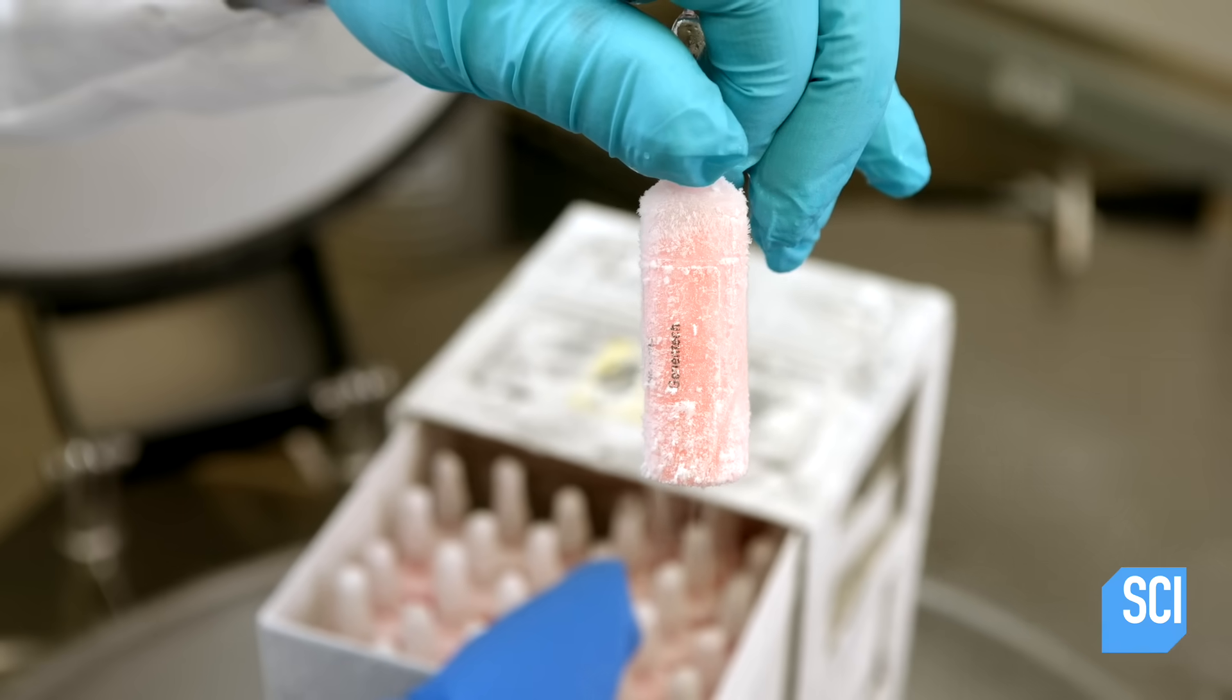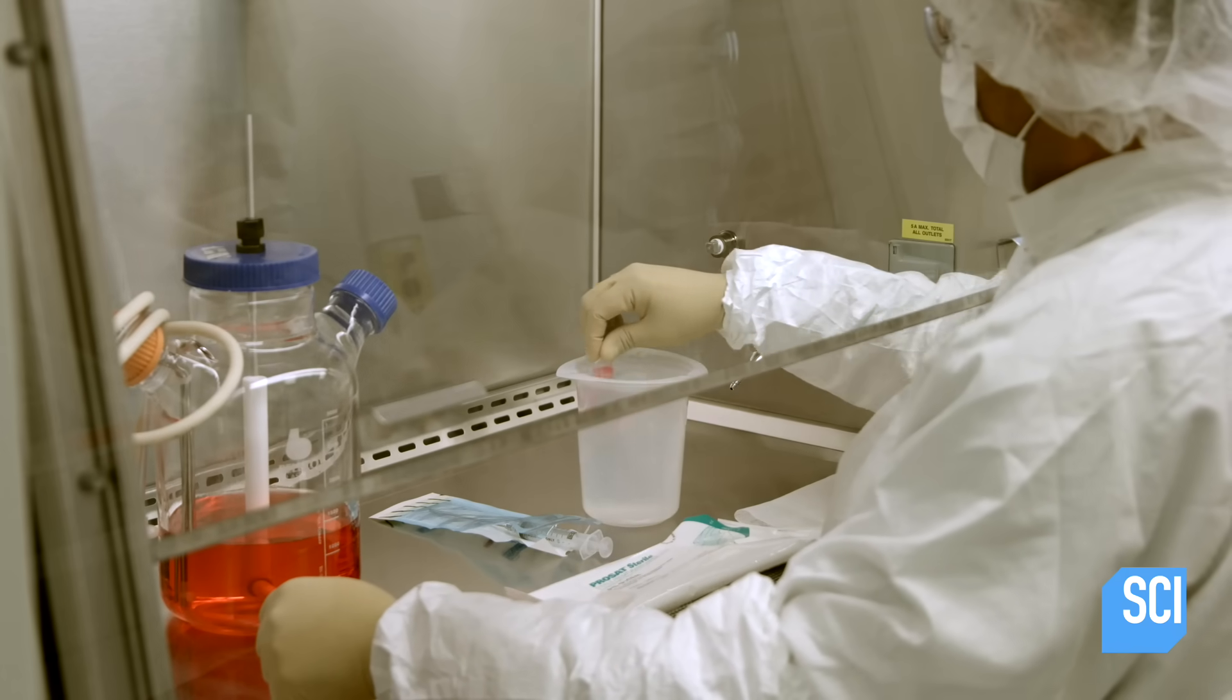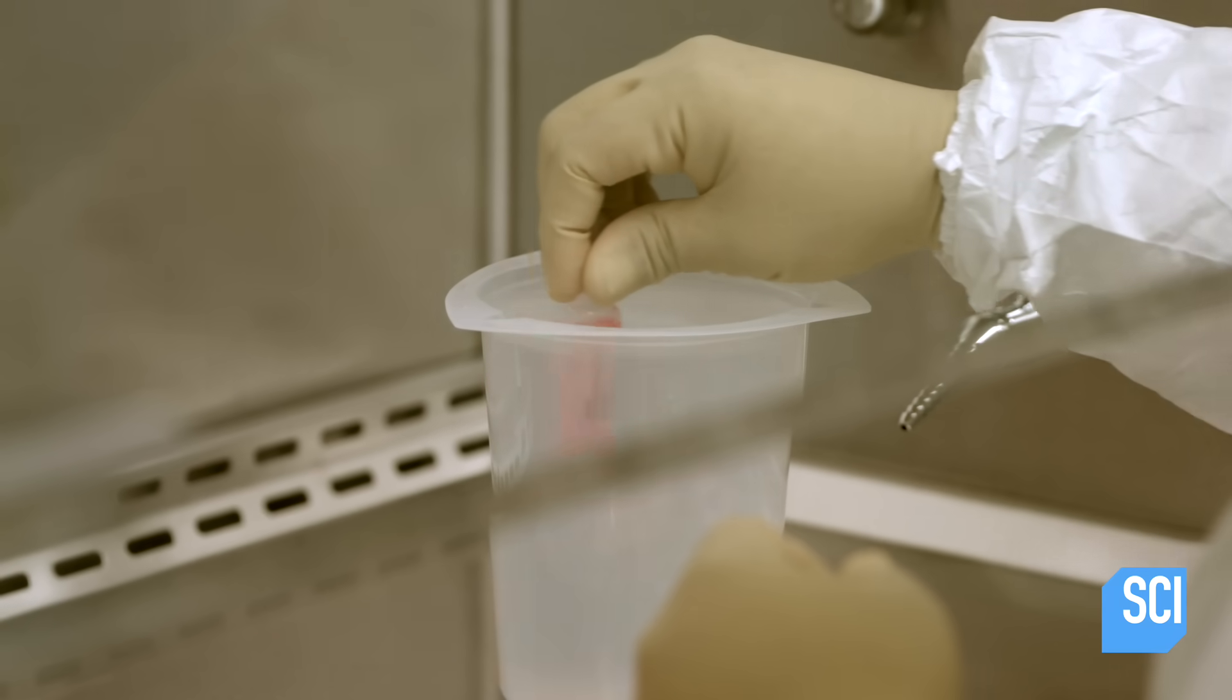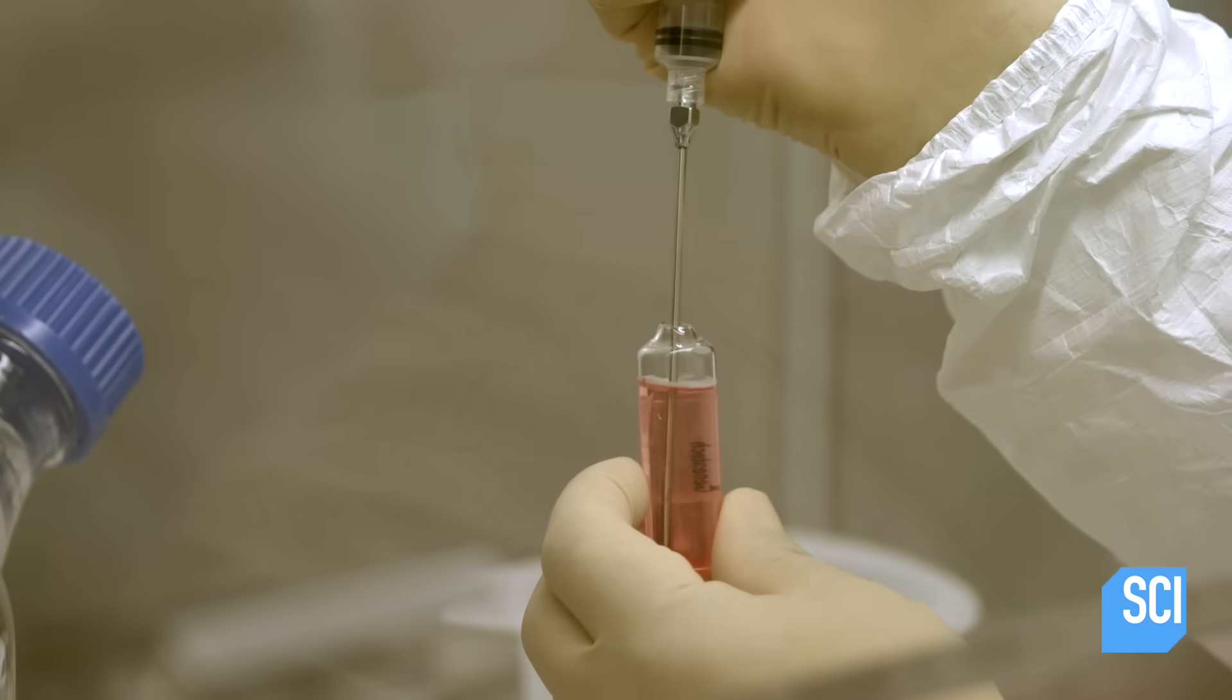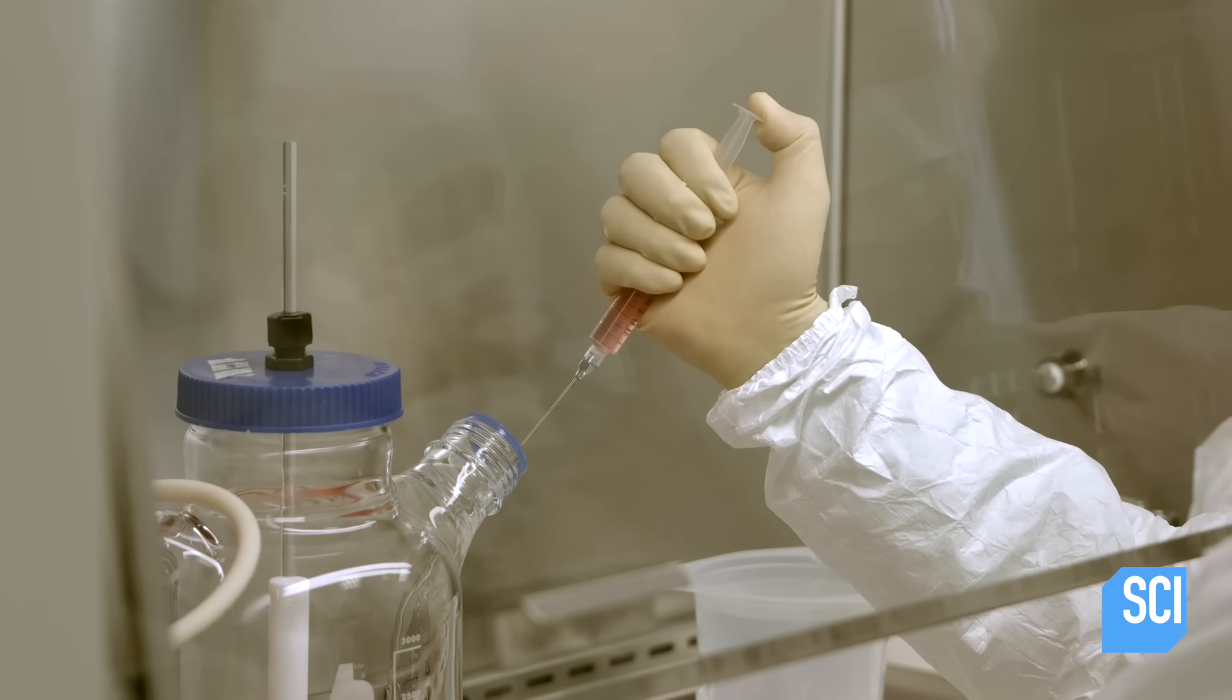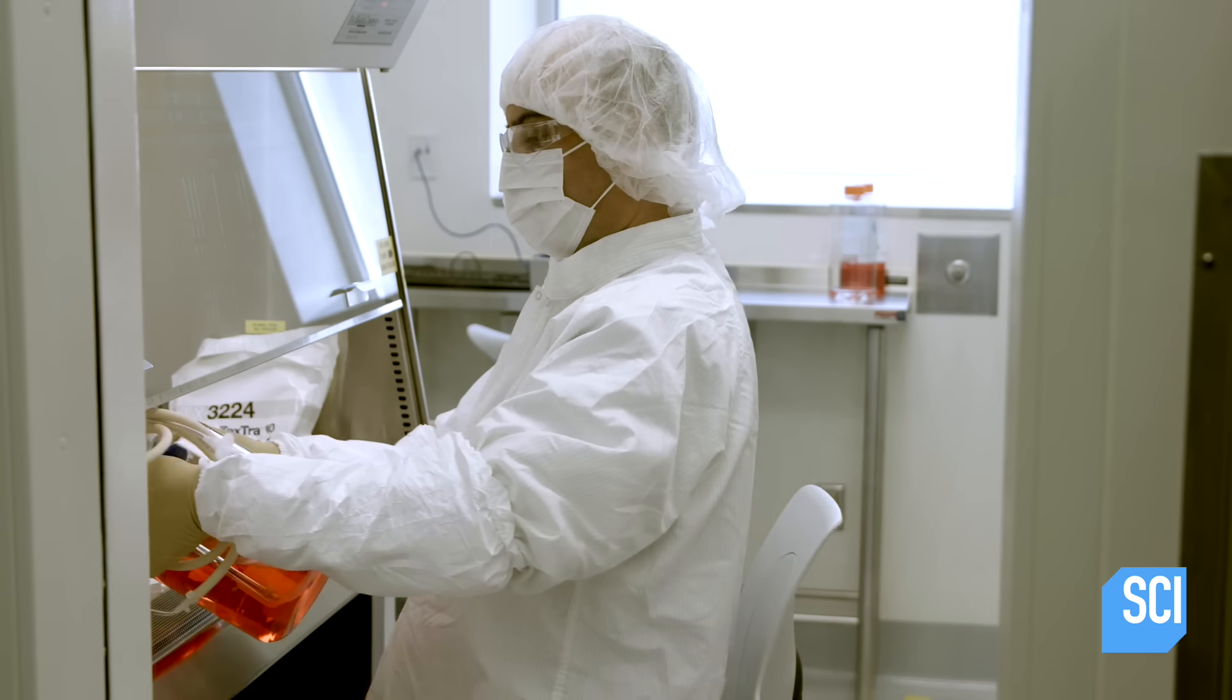In the seed lab, a technician thaws the cells in warm water and transfers them to a glass flask that contains growth media. The growth media is comprised of hundreds of nutrients, including vitamins and minerals.